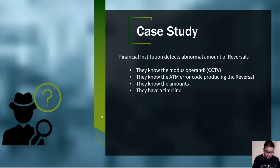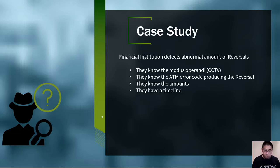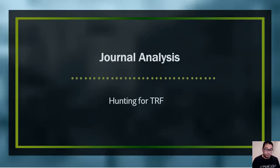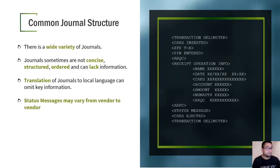Now let's talk about a real forensic case I attended. In this project, the financial institution detected an abnormal amount of reversals — they saw a spike. When I was called, they told me they knew the modus operandi from CCTV records, they knew which ATM error was producing the reversals, how much money was stolen, and the timeline. My job was to do a deep analysis of thousands of journals, looking at the journal analysis, the status messages, and the transactional switch logs.